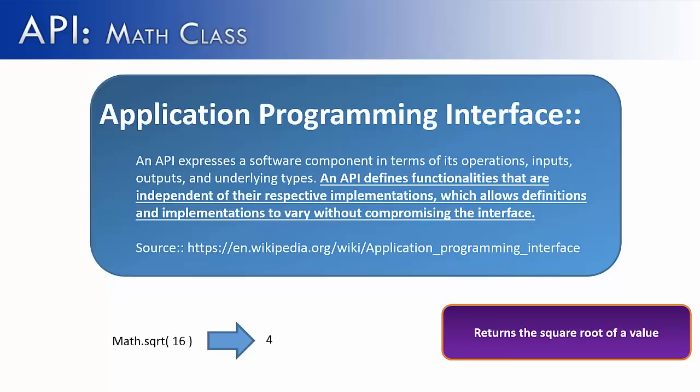We don't know what's happening behind the scenes, nor do we care, nor do we want to know. We just want to know, how does this method work for us? And I pass in a 16, I get out a 4. If it works twice as fast as before, it's not going to affect or compromise what the API says. The API is going to remain unchanged.